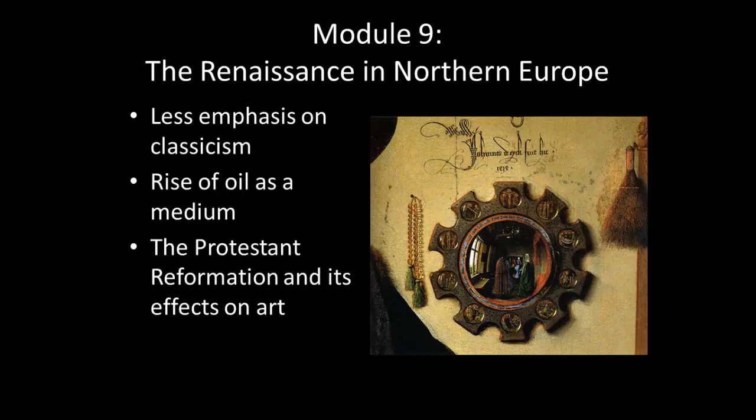Some of the things we'll be focusing on are the differences in Northern Europe compared to Italy. In Northern Renaissance art there's less of an emphasis on classicism and classicizing themes. Although they do show an interest in naturalism, they're not really specifically looking back to ancient Rome as a prototype.